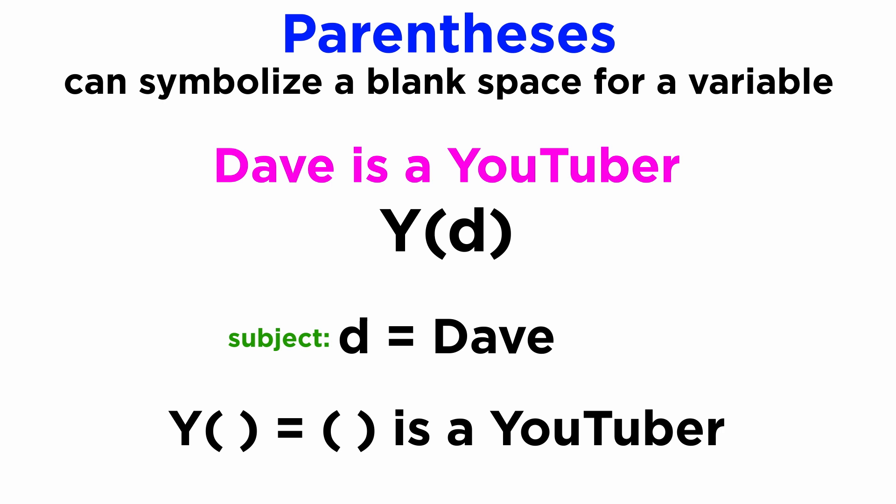In this case, we can call D the logical subject of our argument, and Y() or just Y our logical predicate, or the function of the argument. Dave is a YouTuber, or Y(D), would be a sentence with a defined value.